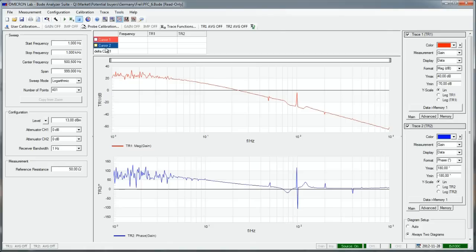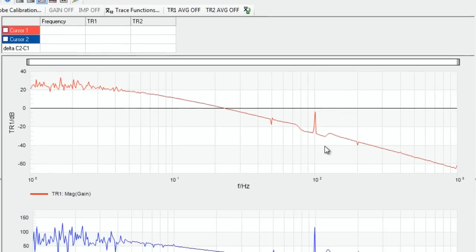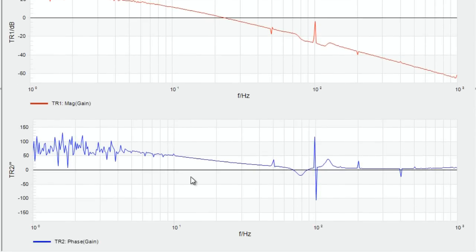The measurement has finished and as a result we get two curves. The red curve shows the gain magnitude and the blue curve the gain phase.